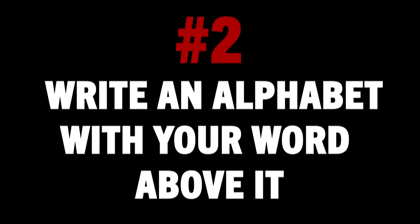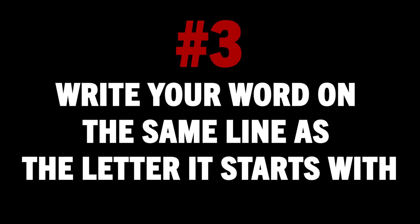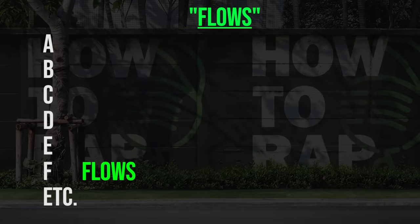Step two is write an alphabet with your word above it. Write the alphabet from letters A to Z on a notepad or in a notes app — the reason for this will be explained in the next step. Just write the entire alphabet with one letter for each line, then put your chosen word to rhyme above. So in our case, we have flows at the top. Step number three is write your word on the same line as the letter it starts with. Write your word a second time next to the letter that it starts with, so you would place the word flows next to the letter F. At this point, you should have the word flows at the top, the alphabet down the page, and the word flows next to the letter F.